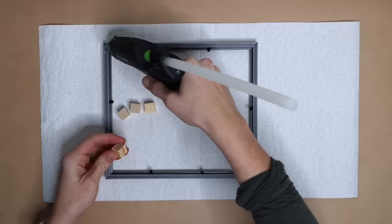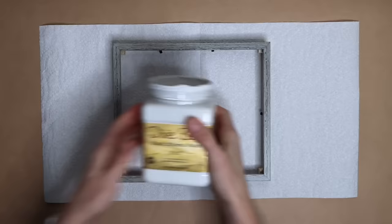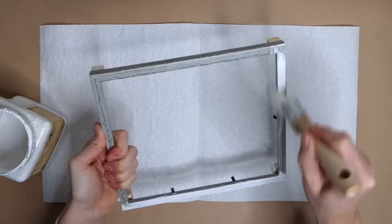Head to Dollar Tree and pick up wood blocks, two wood trays, two larger frames, and two 5x7 frames. Take four wood blocks and hot glue them to the underside of one of the frames. Paint both frames.